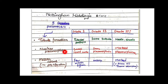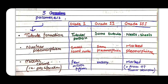As far as nuclear pleomorphism is concerned, in grade 1 there will be no pleomorphism — meaning no variety in structure or shape — and almost all cells will have small round nuclei. In grade 2 some pleomorphism will be present, while in grade 3 or highly undifferentiated tumors, marked pleomorphism is present.